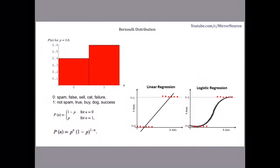Zero could represent spam, a false signal, a sell decision for stocks, a picture of a cat, or a failure event. One represents the opposite — not spam, a true signal, a buy decision, a picture of a dog, or a successful event. These are examples of the different binary classification problems we can solve.